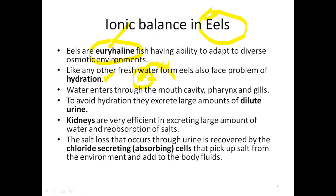Similarly, even eels when living in freshwater face the problem of hydration. For the excessive water entering, one of the mechanisms adapted by freshwater eels is the production of dilute urine — they produce dilute urine containing a lot of water, helping dehydrate the body. Along with that, they have efficient kidneys that help excrete a lot of water, though some salt is lost along with that water.